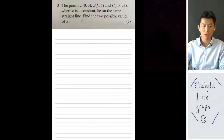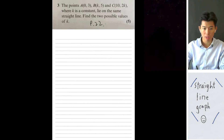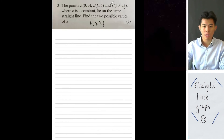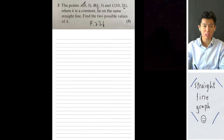The next question is also from page 226. They want us to find two possible values of k. The key point in this question is that the points lie on the same straight line, which means the gradient of AB equals the gradient of BC.